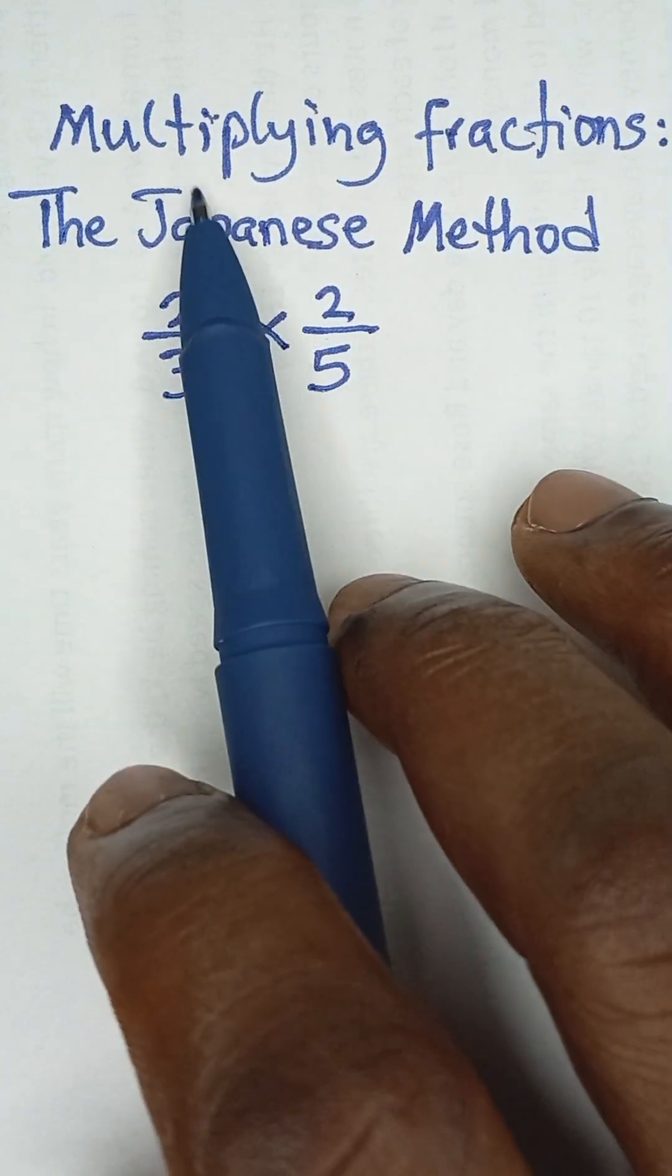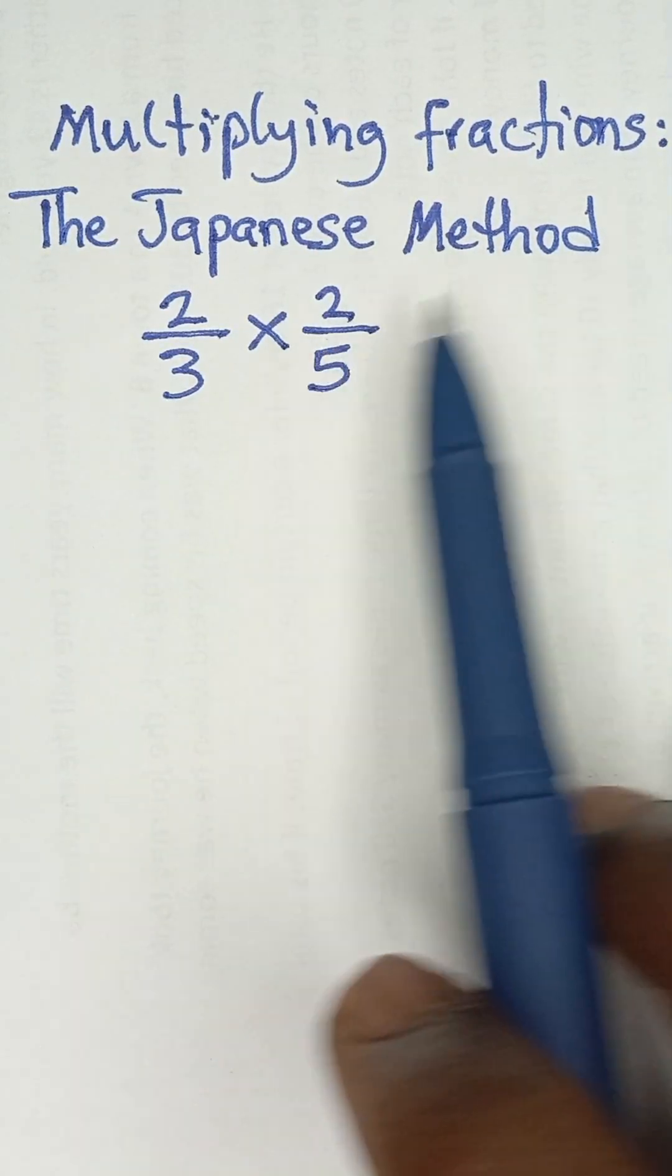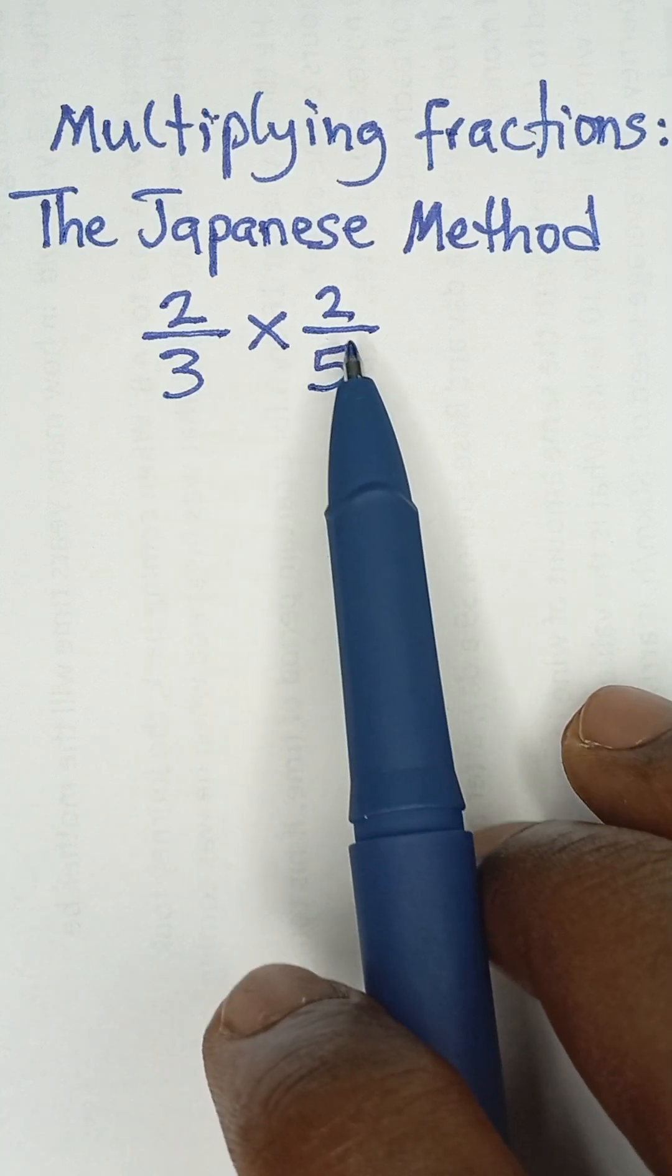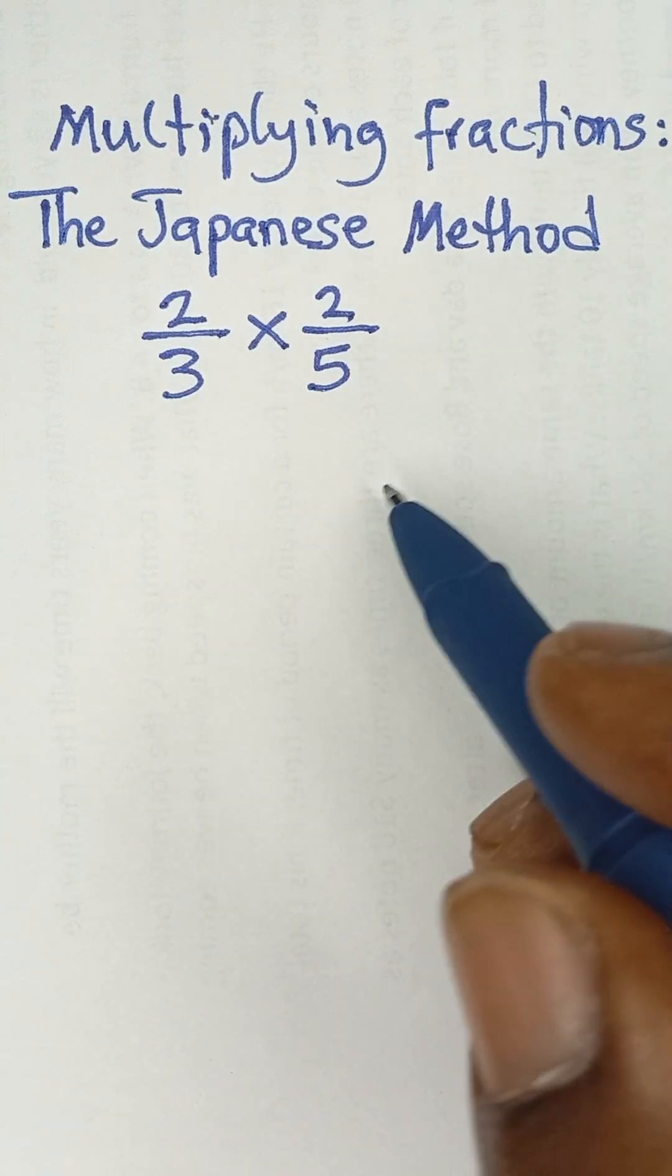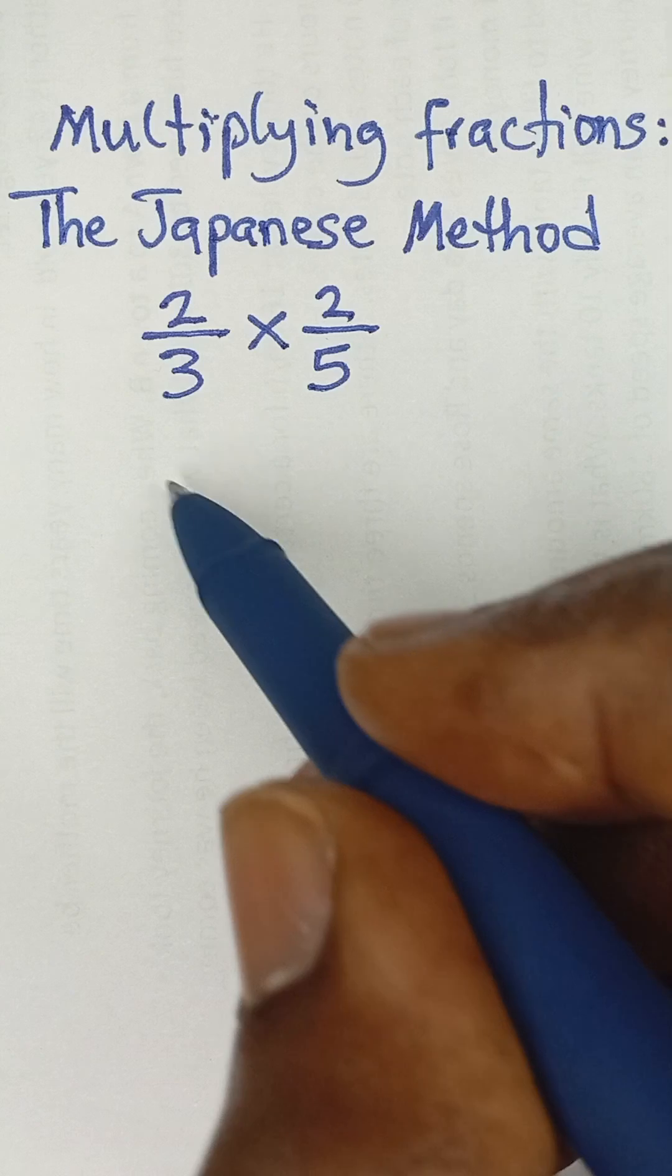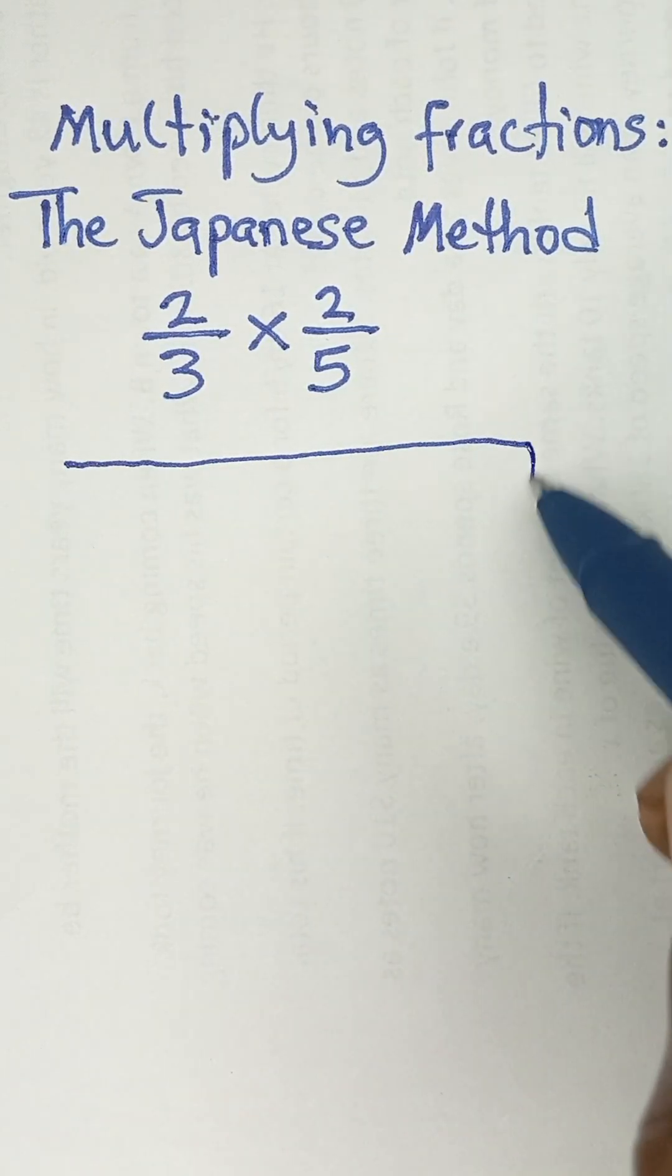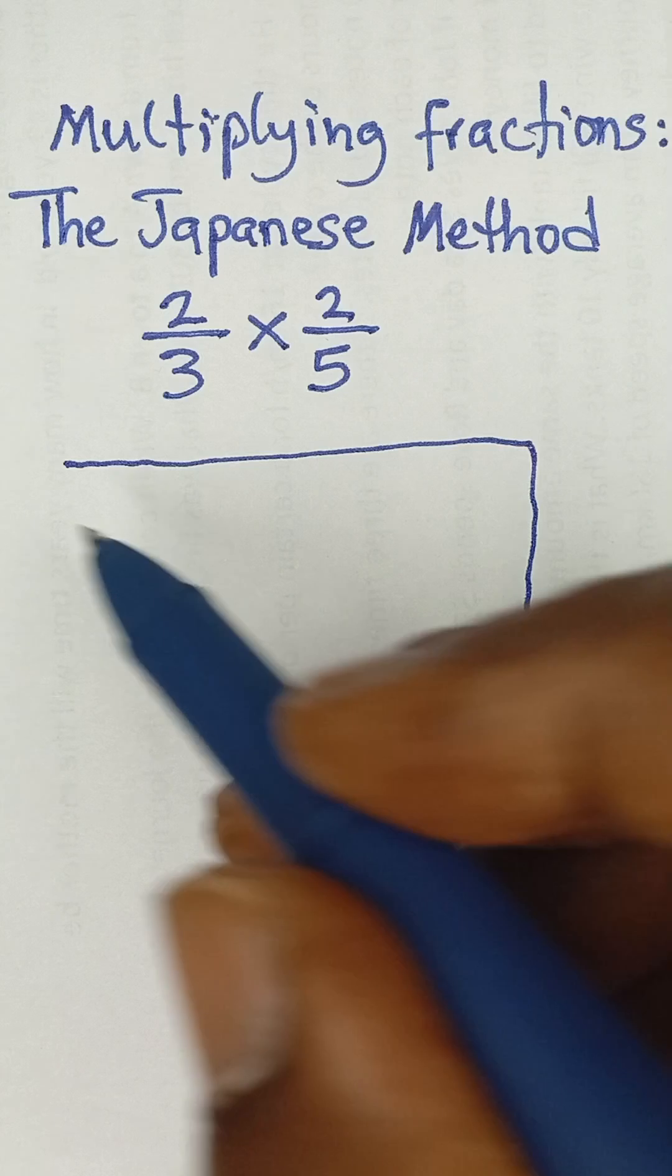Alright, let's look at the Japanese method of multiplying fractions. This is 2/3 multiplied by 2/5. The first thing to do is draw a box, simply draw a box like this.